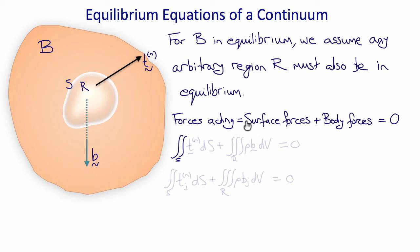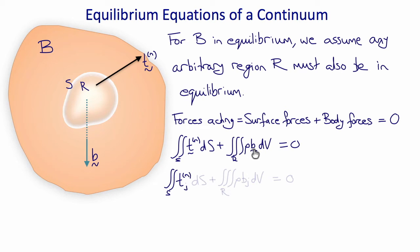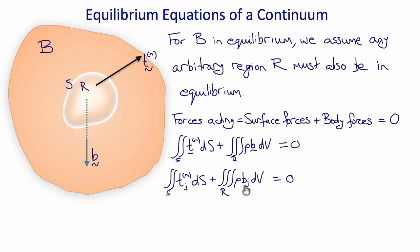The surface forces acting on the region are the double integral over the surface of the surface tractions T-N with respect to S, plus the triple integral over the volume of rho times B. B is body force per unit mass, so rho times B is body force per unit volume. Writing this in index notation, we obtain the surface integral of Tj with respect to S plus the volume integral of rho times Bj with respect to volume, equal to zero.